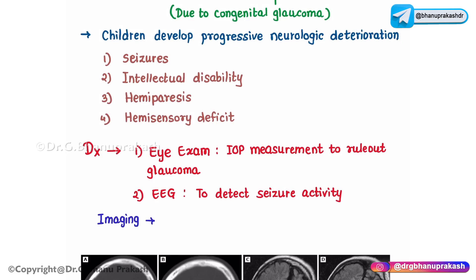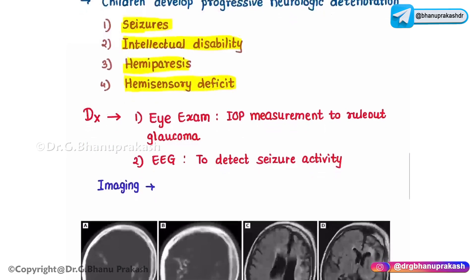Children with Sturge-Weber syndrome develop progressive neurological deterioration. Key neurological manifestations include: seizures; intellectual disability — children typically develop normally for several months after birth, after which they manifest developmental delay; hemiparesis — weakness or partial paralysis affecting one side of the body; and hemisensory deficit, also called hemisensory loss or hemianesthesia — a loss or impairment of sensation on one side of the body.